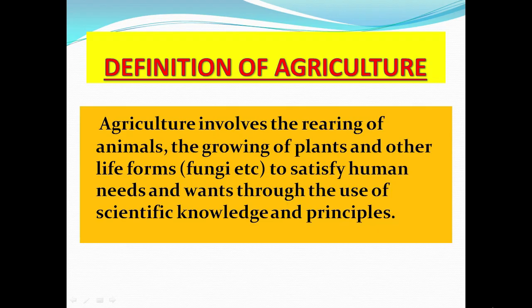Let us get into the definition of agriculture. Agriculture involves the rearing of animals and the growing of plants and other life forms — fungi, etc. — to satisfy human needs and wants, through the use of scientific knowledge and principles. In other words, agriculture basically deals with plants and animals.